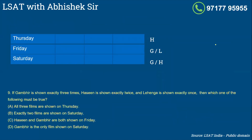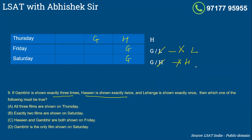So question number nine: if Gambhir is shown exactly three times, I'll put Haseen here because Haseen is the last movie - when I put it in the last slot, I have multiple options. Gambhir is shown exactly three times, so Gambhir will come here. This basically means Friday can't have Lehenga, because it has to be either Gambhir or Lehenga - not both - and Gambhir is shown three times. So I put Gambhir here, and here also Gambhir will come. So Haseen will not come on Saturday. You cannot have Haseen on Saturday. You cannot have Lehenga on Friday. Gambhir has to come on all three days. Haseen is shown exactly twice - Haseen cannot be shown on Saturday, so Haseen has to be shown on Friday. Please always read: must be versus could be - there's a difference.